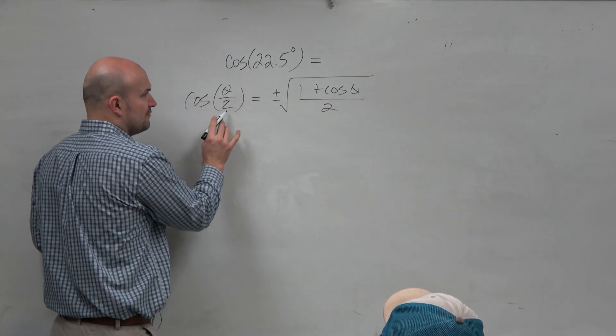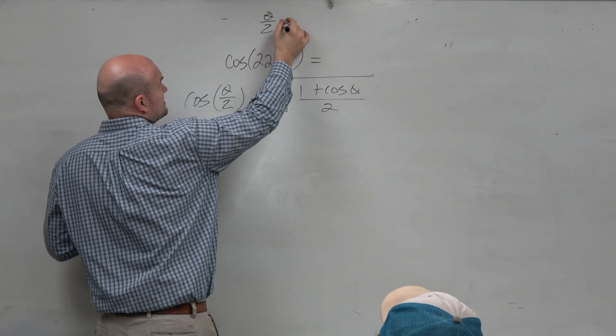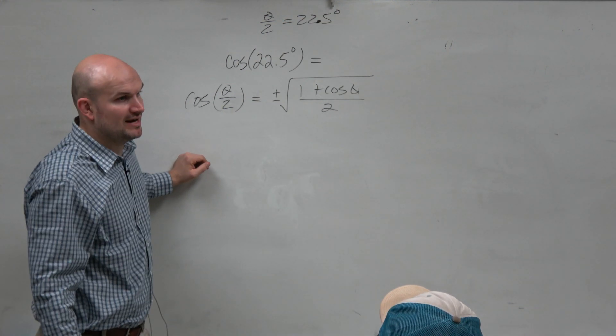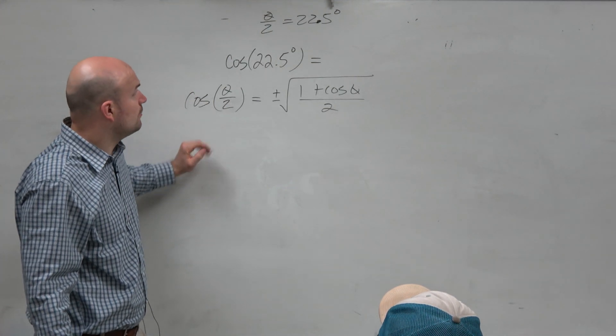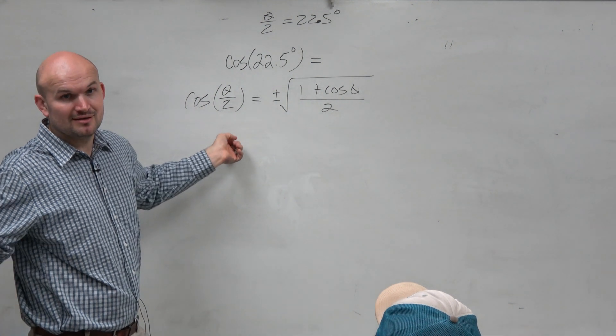So if we're using this formula to evaluate this, then you guys would be OK with me writing this. Theta over 2 is equal to 22.5. Now, which quadrant is 22.5 in? First. First quadrant. What do we love about the first quadrant? It's all positive.